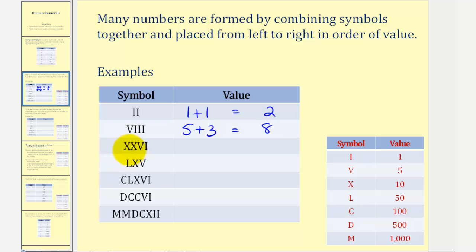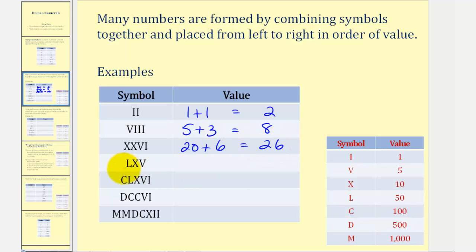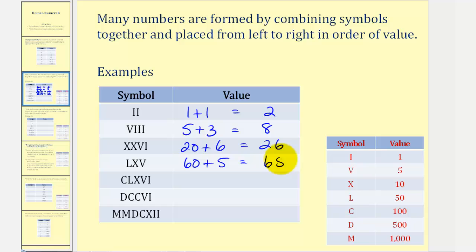Here we have a V followed by three capital I's. This would be five plus three, which is equal to eight. Next we have two X's — that would be ten plus ten, or twenty, plus V followed by I, which would be five plus one or six. This is twenty-six. Next we have an L, which is equal to fifty, and X is ten. Fifty plus ten would be sixty, plus the V, which is equal to five. Sixty plus five is sixty-five.